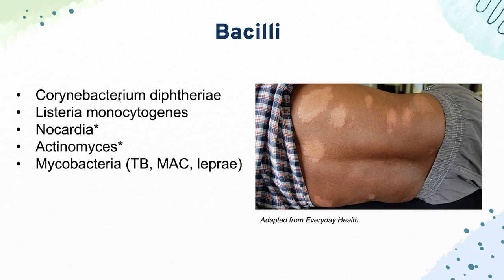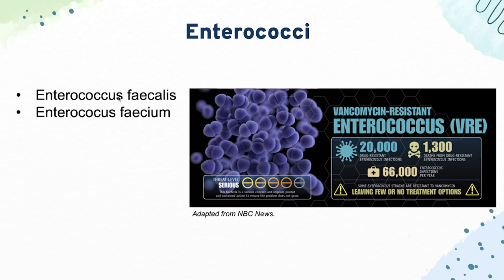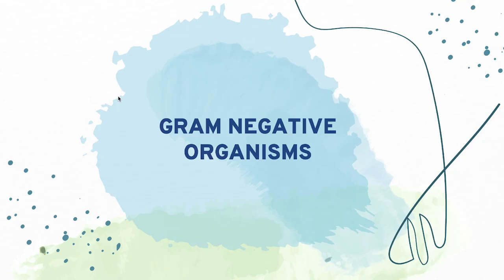Next, for our enterococci, we have Enterococcus faecalis and Enterococcus faecium. Both grow in 40% bile or 6.5% sodium chloride, and cause UTI, biliary tract infections, or endocarditis following GI and GU procedures. That's pretty much it for the gram-positives.